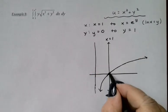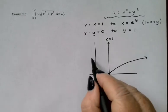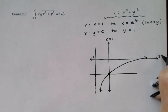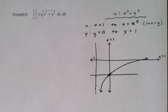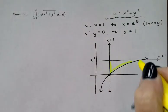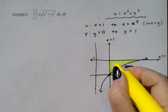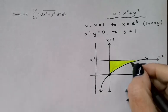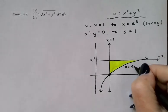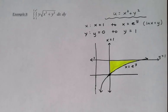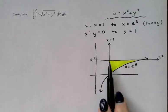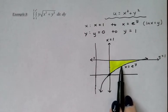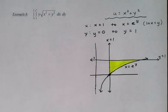y goes from y equals 0, which is already this intersection point, to y equals 1. And I can see my region right in here. See, this was x equals e to the y. Let's double check. On the x, I'm going from x equals 1 to x equals e to the y. So left to right, that looks correct. And then the y values from 0 to 1 also look correct.